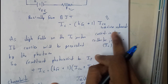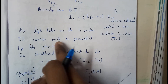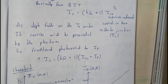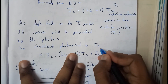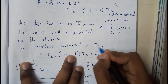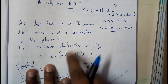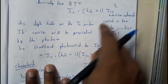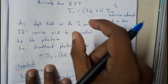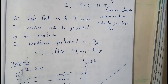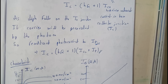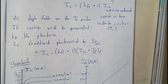As light falls on the JC junction, carriers are generated by photons — the same process as in a PN photodiode. We assume the photon current as IP. The equation becomes: IC = (hFE + 1) × ICO + IP, where ICO is the reverse saturation current and IP is the photon-generated junction current at JC. This extra IP term makes a significant difference in the output current.